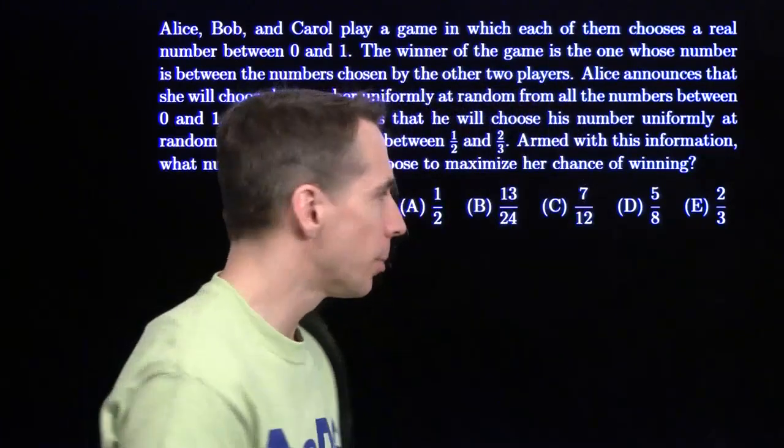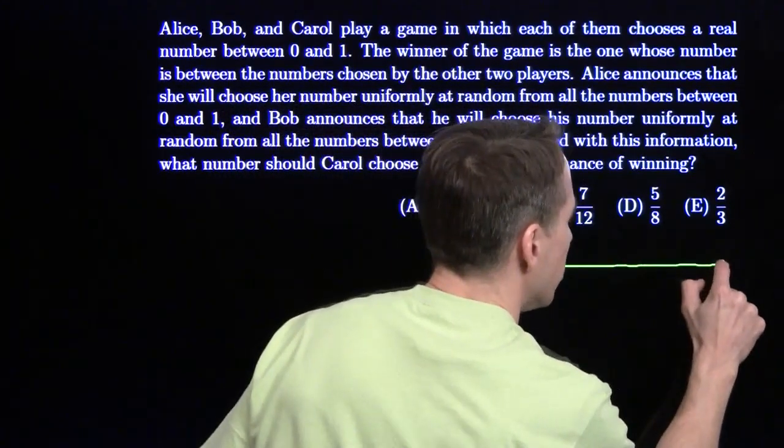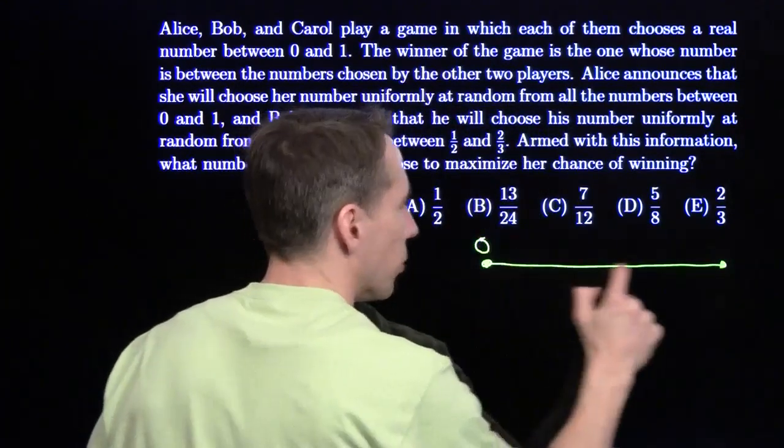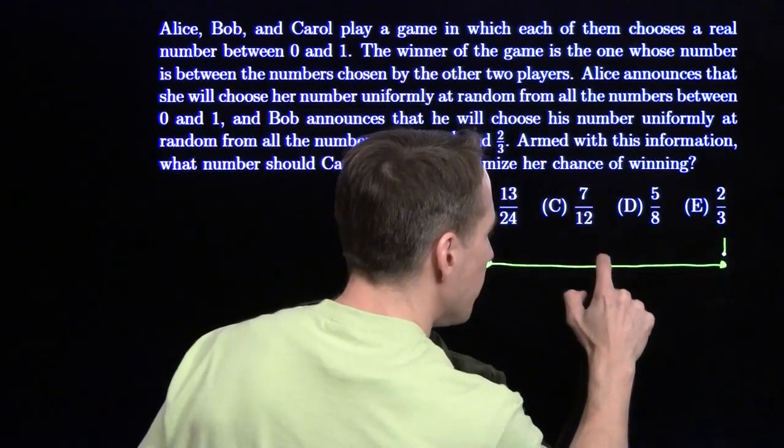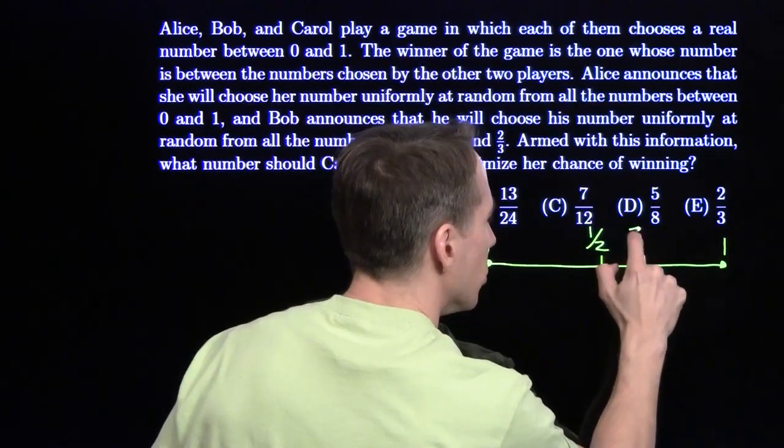We're going to analyze this problem on the number line. We'll start with Alice choosing uniformly at random from 0 to 1, and then we've got Bob choosing uniformly at random from 1/2 to 2/3.